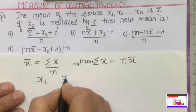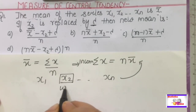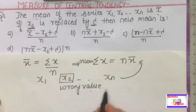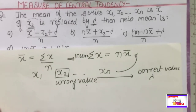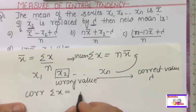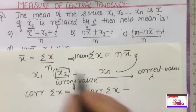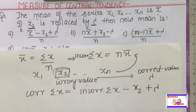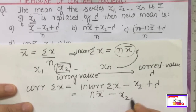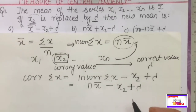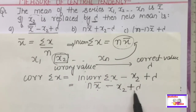So the observations had mean x̄. Here x2 is the wrong value and we need to replace x2 with the correct value, which is lambda. To find the corrected Σx: from the incorrect Σx, we subtract the wrong value x2 and add the correct value lambda. So corrected Σx = n·x̄ - x2 + lambda.